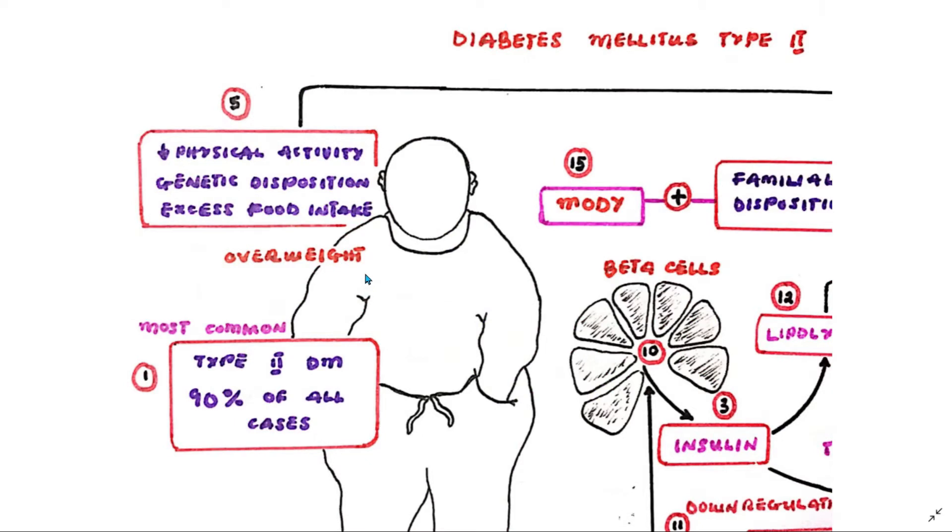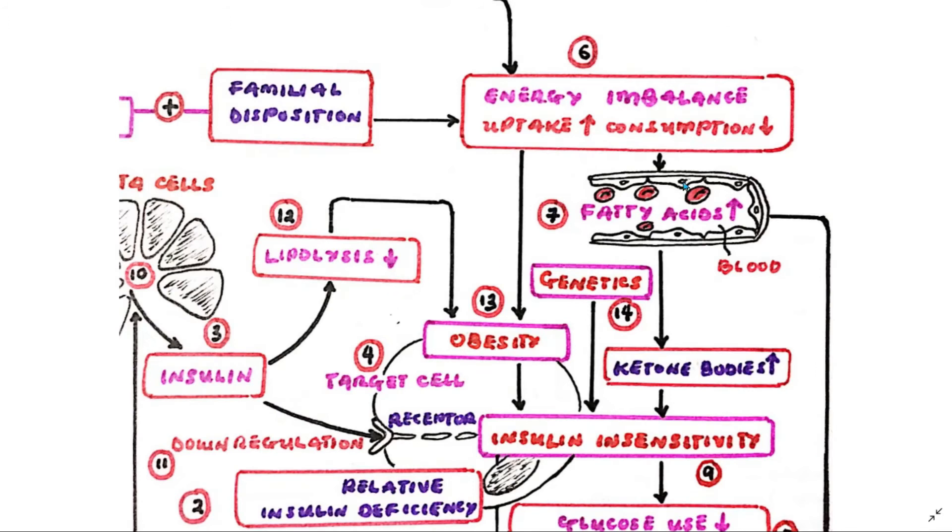Most of the patients with type 2 diabetes are overweight. The obesity is a result of very little physical activity, genetic disposition, and excess food intake.